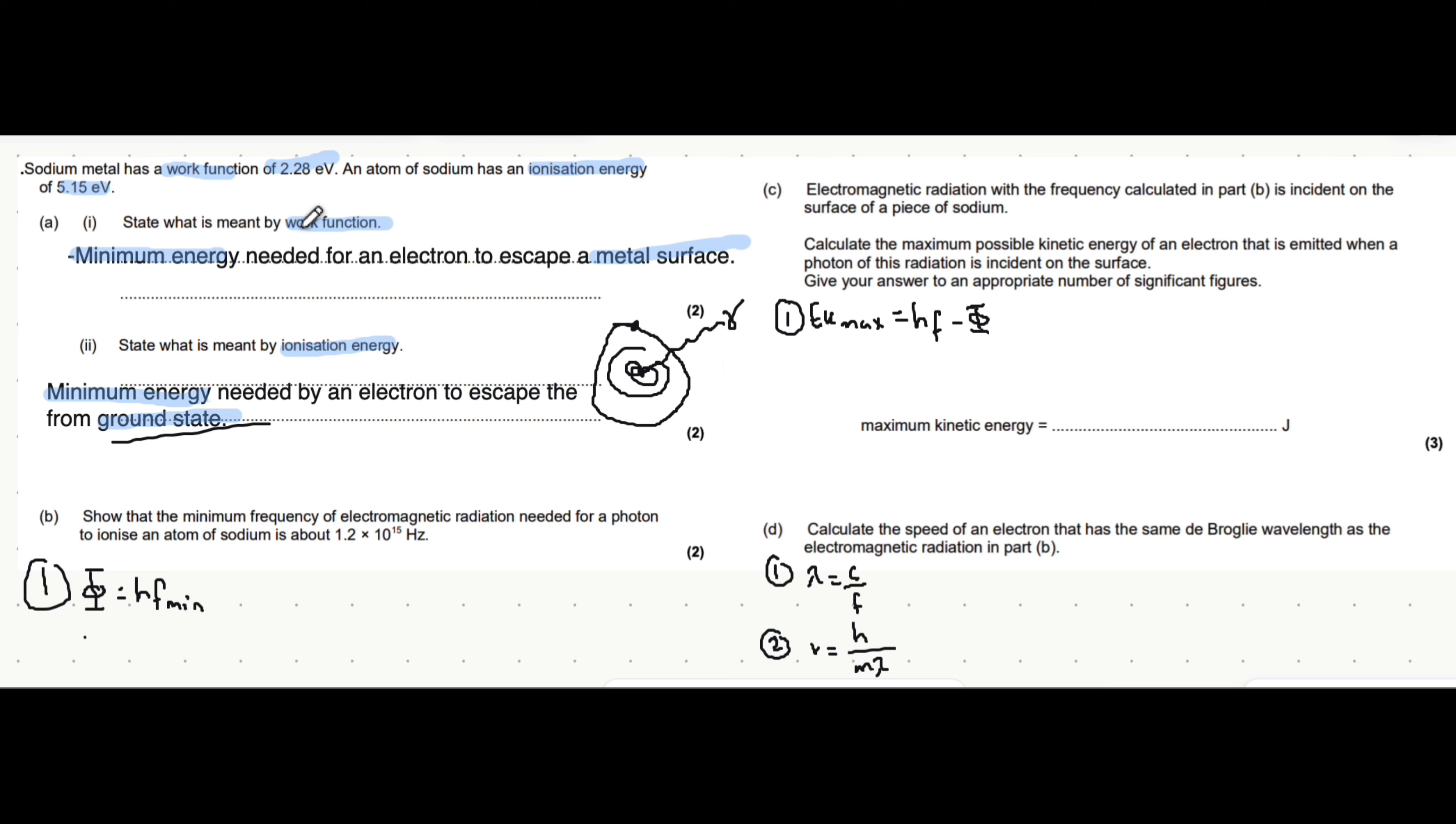The work function refers to when the photon has just enough energy so that when an electron on the surface absorbs it, it can escape. Of course, ionization will require extra energy because it has to excite past the energy levels and then escape the atom. Let's move on to part b.